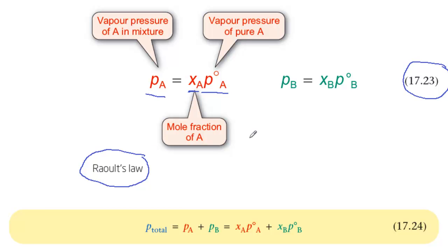We can write an equivalent expression for the vapor pressure of B, and we can use those two to write an expression for the total pressure in the vapor of A and B over the mixture.